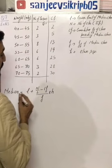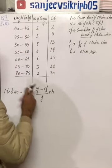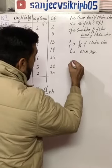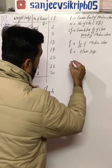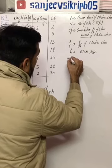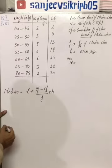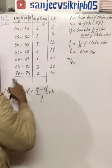Now after finding cumulative frequency, we need to find all these terms. So first of all, we need to find the median class. What is the method to find the median class?